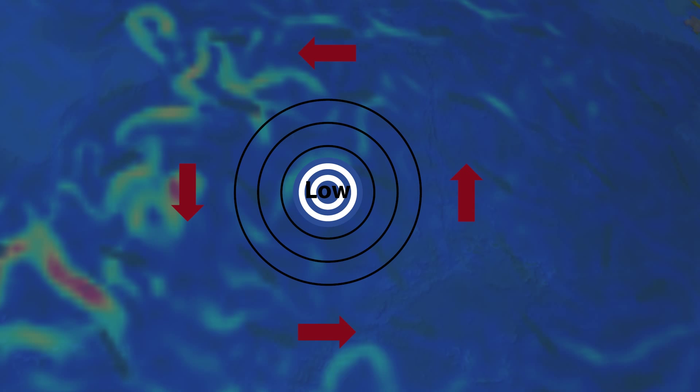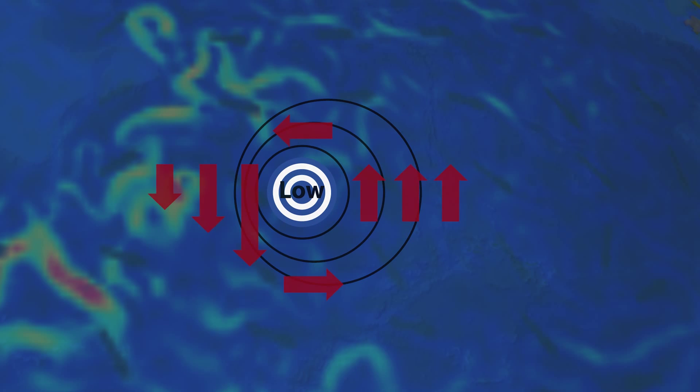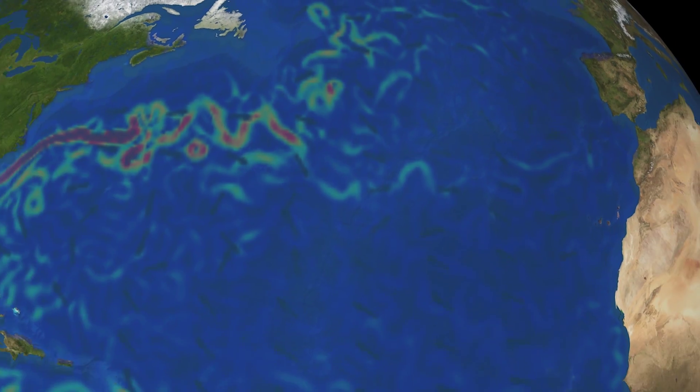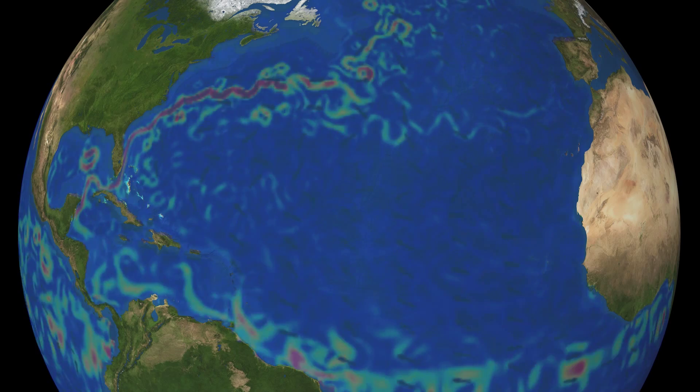The resulting geostrophic flow is counter-clockwise around the low. However, due to the variation of Coriolis with latitude, we again find westward intensification. Hence, the subpolar gyre in the Atlantic and the circulation in the Gulf of Alaska in the Pacific both form strong western boundary currents, but the sense of surface circulation is opposite to that of the mid-latitude gyres.